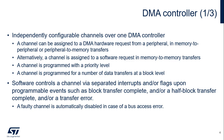Let's focus on the STM32-WL5 DMA controller. Each channel of the DMA controller is independently configurable. A channel can be assigned to a DMA hardware request from a peripheral in peripheral-to-memory or memory-to-peripheral data transfers. Alternatively, a channel is assigned to a software request in memory-to-memory data transfers. A channel is programmed with a priority level and for a number of data transfers at a block level. The software can control a channel via separated interrupts and/or flags upon programmable events, such as block transfer complete, half-block transfer complete, and/or transfer error.